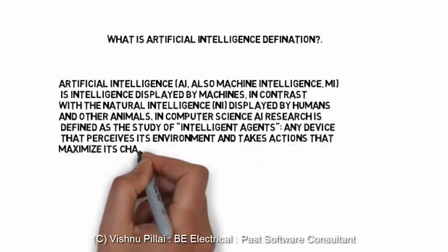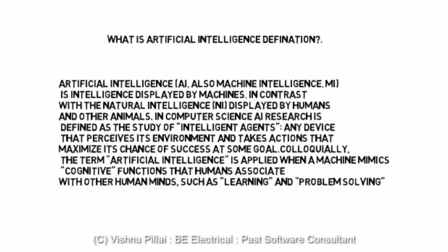Artificial intelligence, or AI, also known as machine intelligence, is an intelligence displayed by machines, in contrast with the natural intelligence displayed by humans and other animals. In computer science, AI research is defined as the study of intelligent agents — any device that perceives its environment and takes actions that maximize the chance of success at some goal. Colloquially, the term artificial intelligence is applied when a machine mimics cognitive functions that humans associate with other human minds, such as learning and problem-solving.